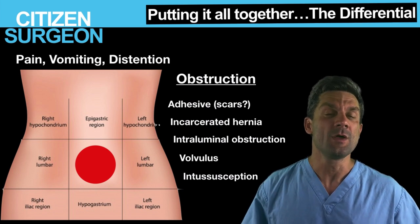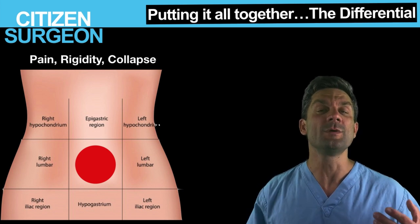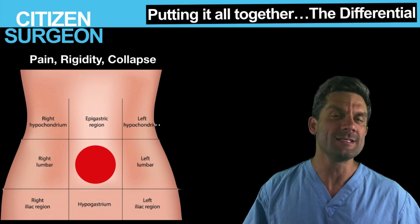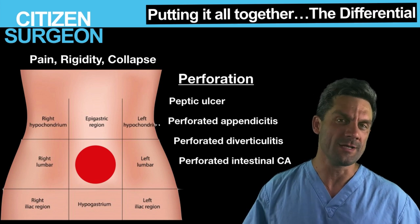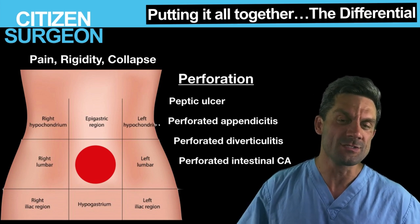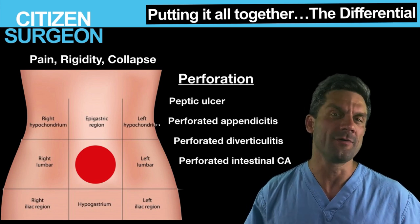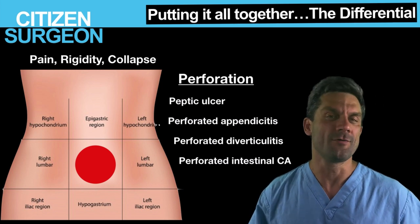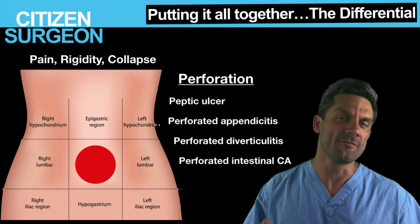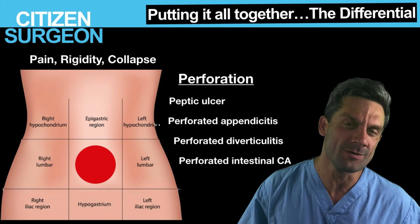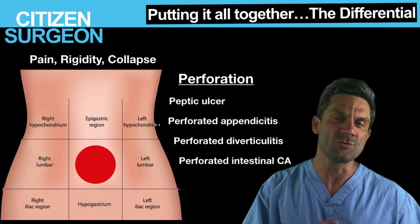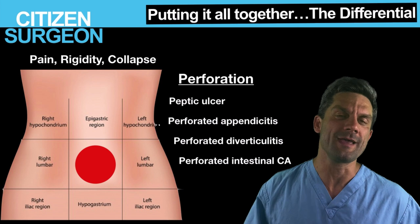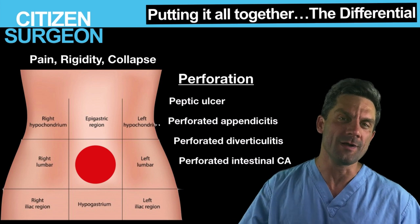If somebody comes in with pain and rigidity — they have peritonitis — this is usually perforation. It could be a perforated ulcer, perforated appendicitis, perforated diverticulitis, or a perforated intestinal carcinoma. Somebody with extreme pain and a rigid peritoneal abdomen — think perforation.